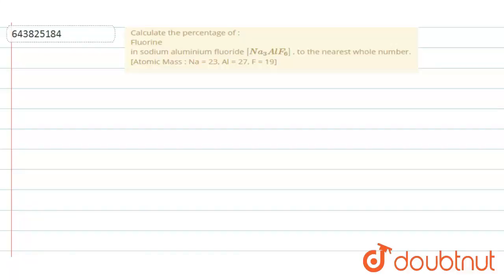Calculate the percentage of fluorine in sodium aluminium fluoride Na3AlF6 to the nearest whole number. The compound is Na3AlF6. We need to calculate the percentage of element.